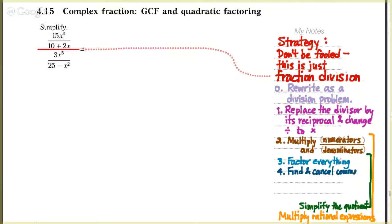Whatever you need to do to make that happen — then we can see if there are factors that the numerator and denominator have in common, cancel them, and then multiply back out all the factors that survive that process and simplify. It looks like a lot, but really it's just another fraction division problem.